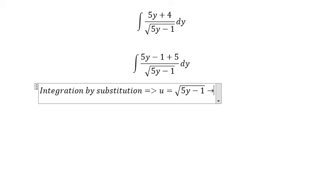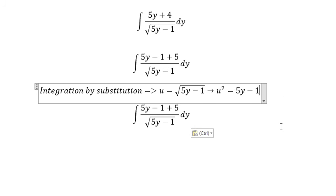U squared equals 5y minus 1, and we can take the first derivative. That's 2u du equals 5 dy, and we divide both sides by 5.